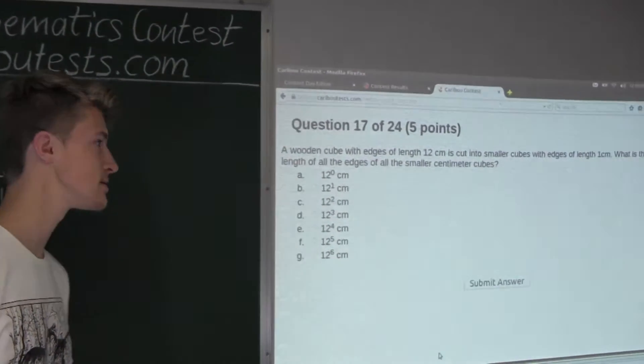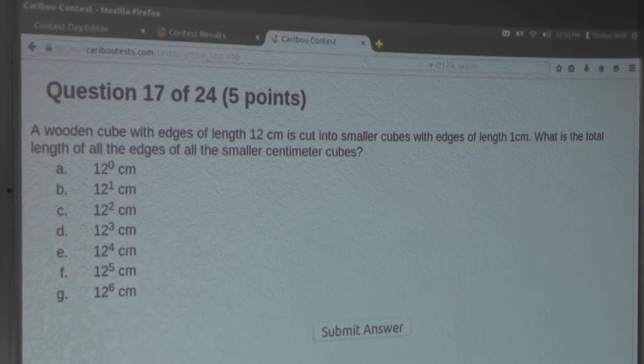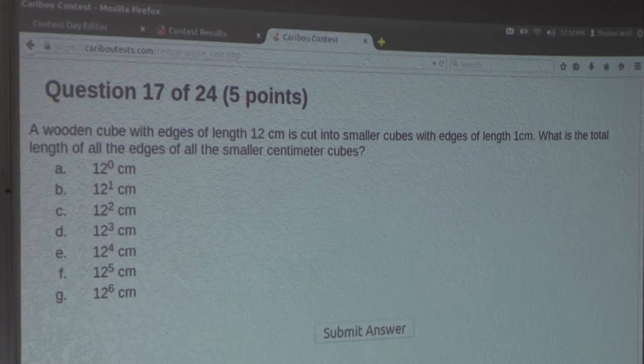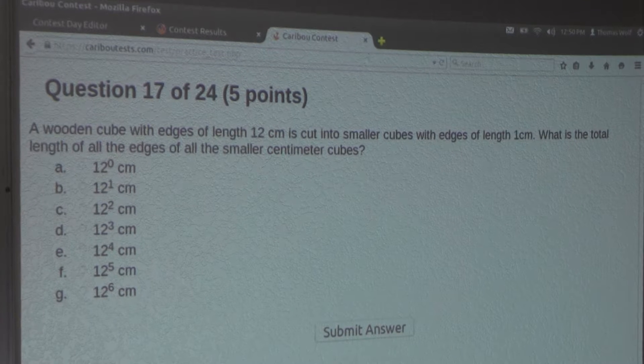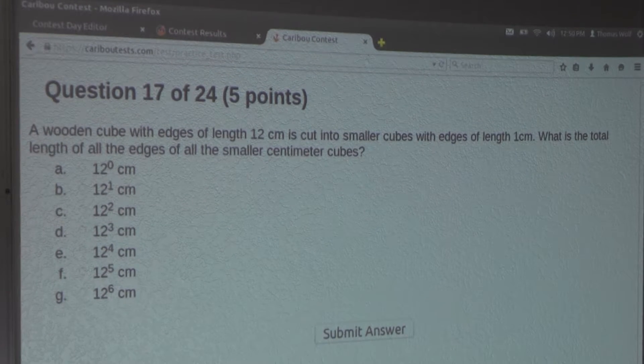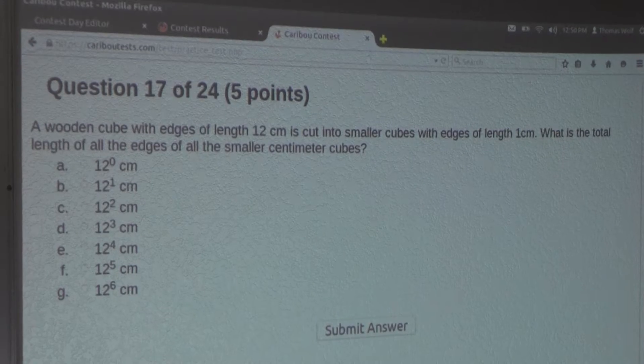So the question is, a wooden cube with edges of length 12 cm is cut into smaller cubes with edges of length 1 cm. What is the total length of all the edges of all the smaller centimeter cubes?